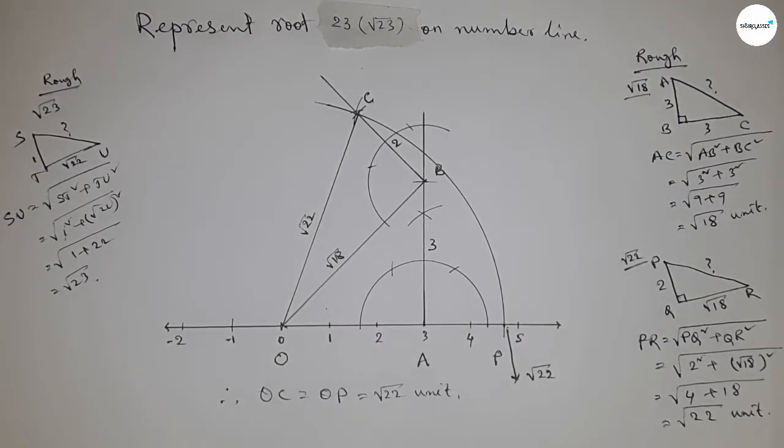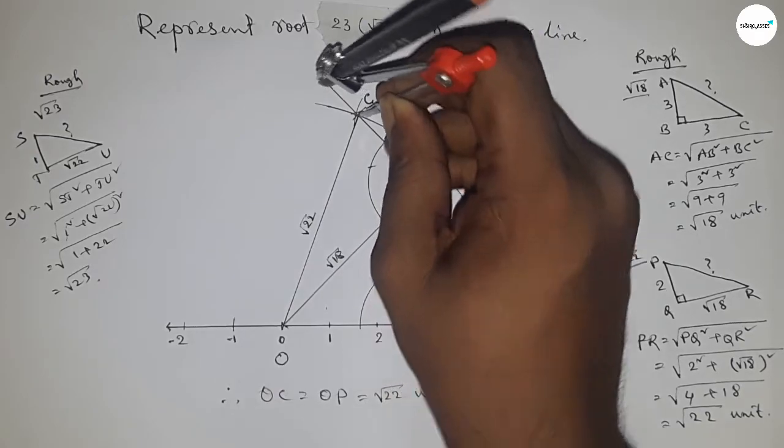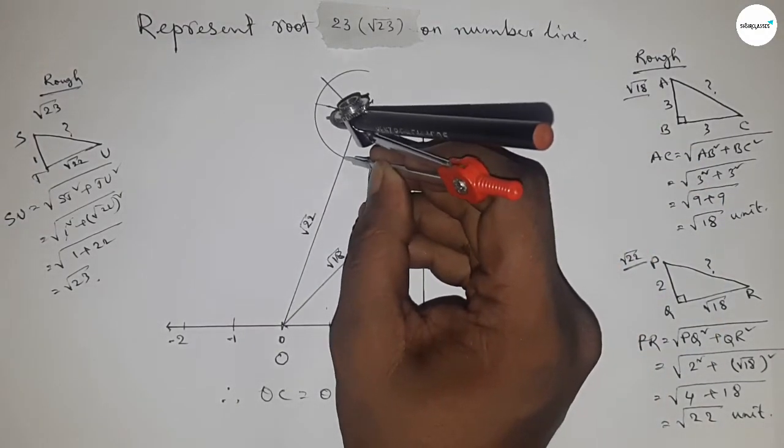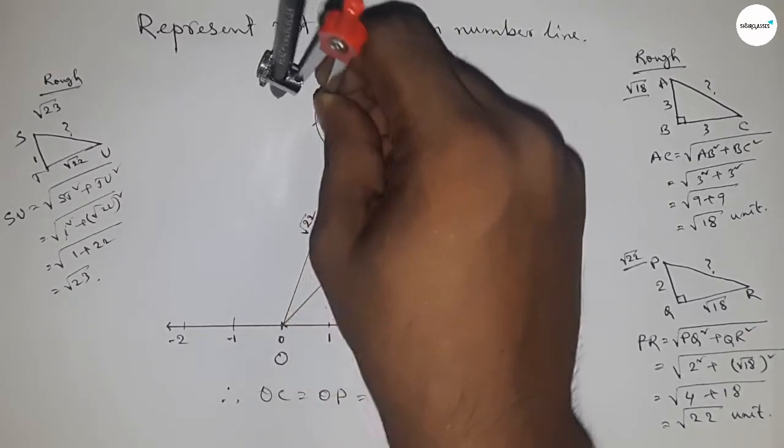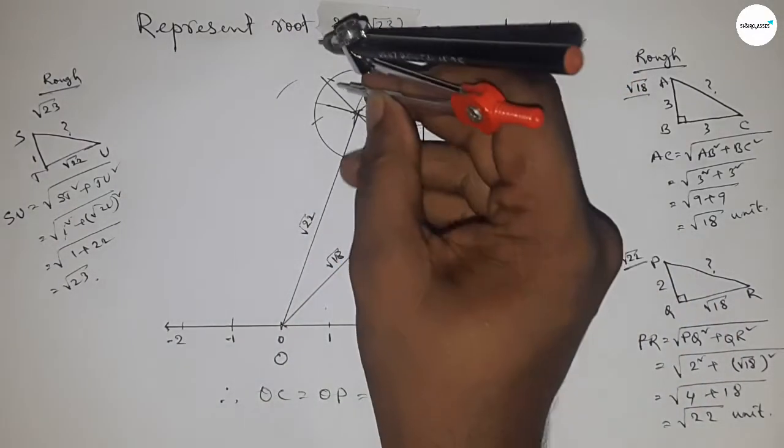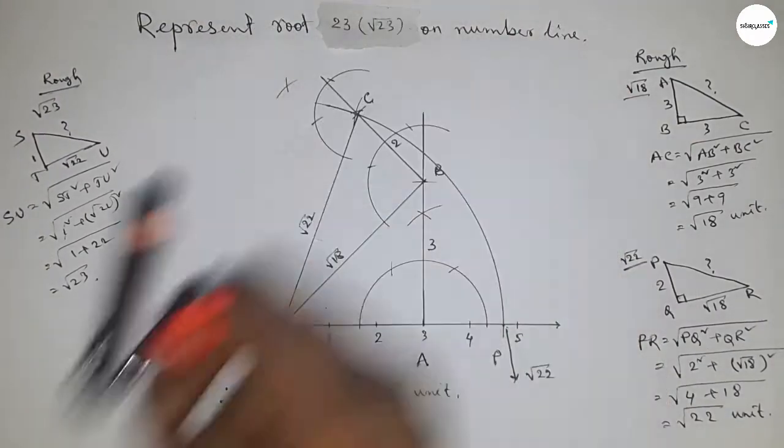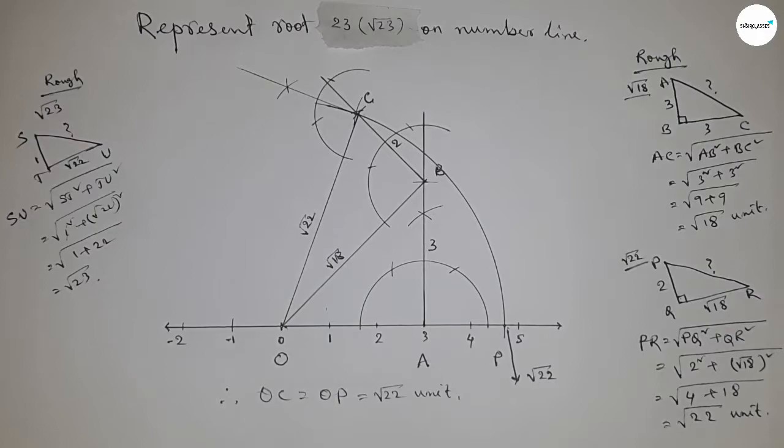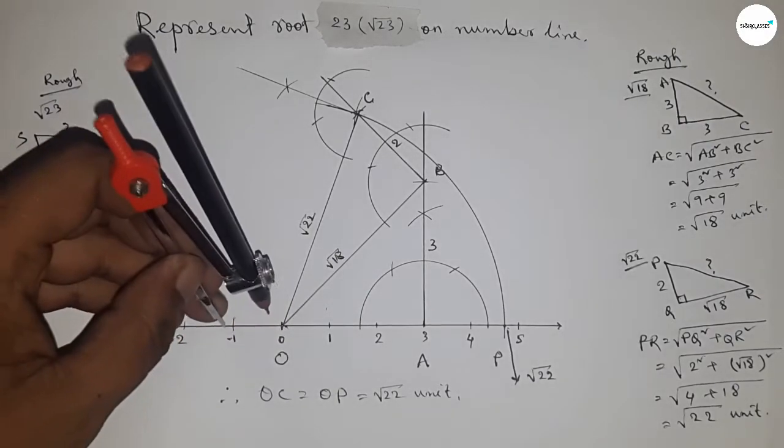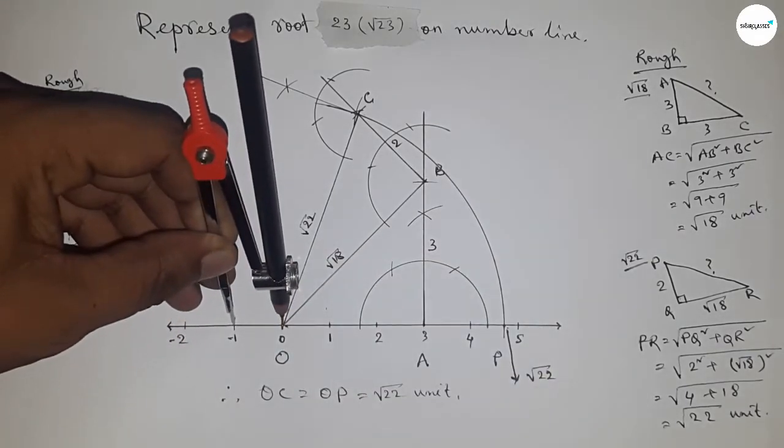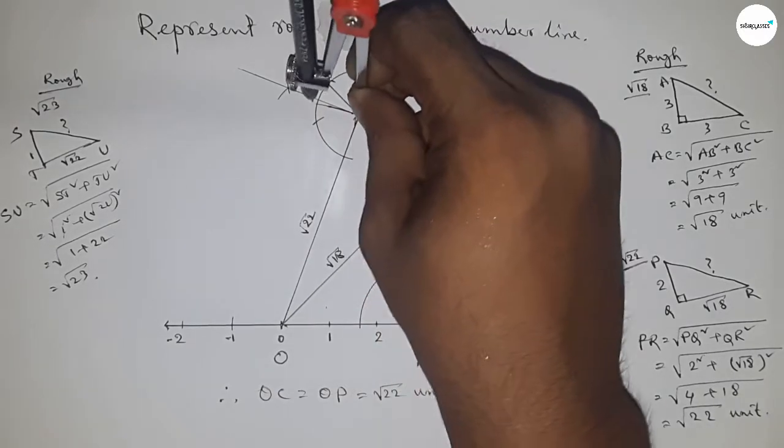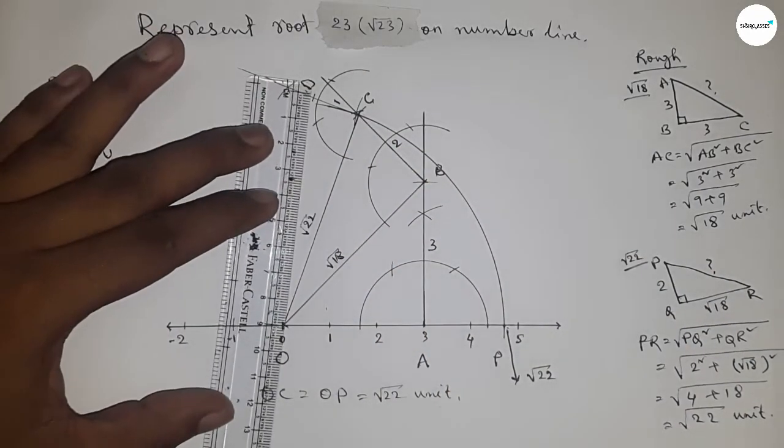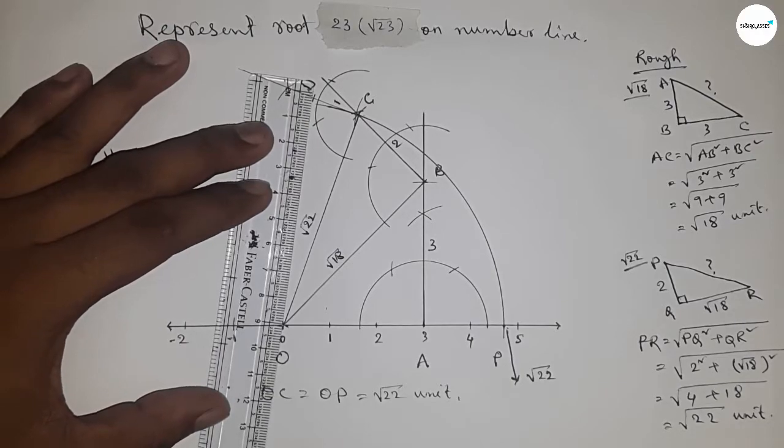First, drawing a 90 degree angle at point C. Putting the compass here and taking any length, drawing an arc here with same length, putting the compass here and cutting. Taking length between any two numbers by compass, putting compass here and cutting here. This is point D, and this is one unit length. Now joining O and D by scale.